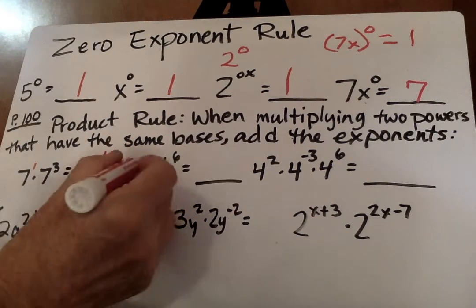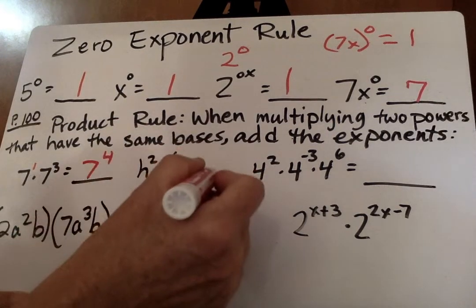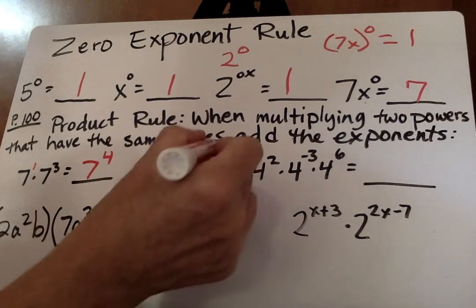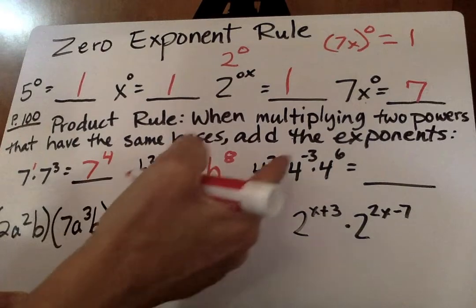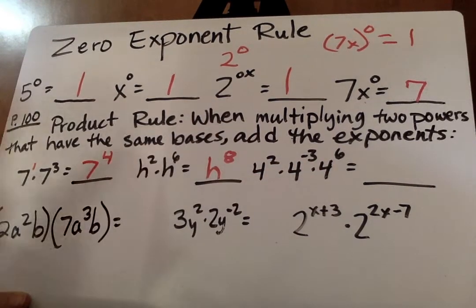This one, h to the second, times h to the sixth, is h to the eighth power. And then this one, oh look, all the bases are the same, so we can add 2 plus negative 3 is negative 1, plus 6 is 5.